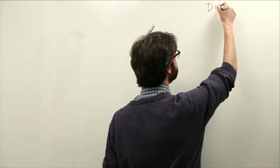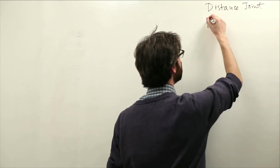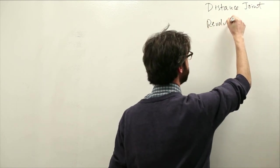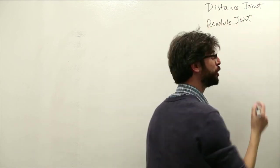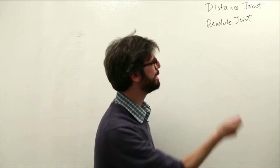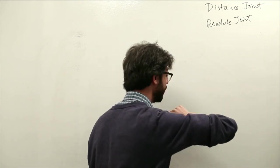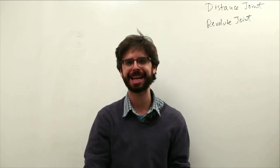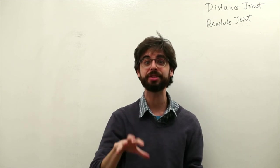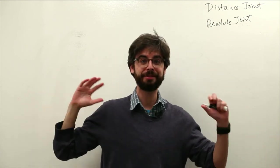We're going to look at a distance joint and we're also going to look at a revolute joint. Now I should mention there are lots of kinds of joints in Box2D. I could keep writing prismatic, rope, pulley, gear, a couple more that I can't remember right now. There are lots of kinds of joints in Box2D to create all sorts of crazy wacky physics scenarios.